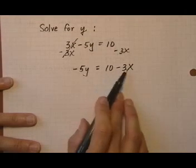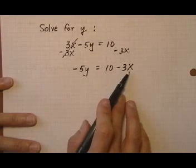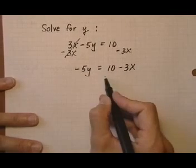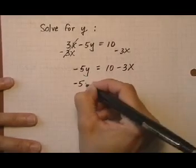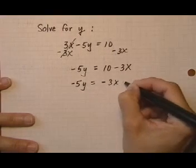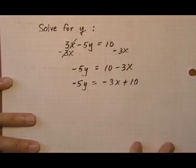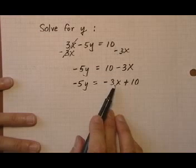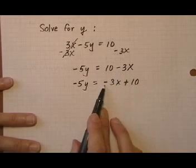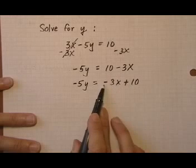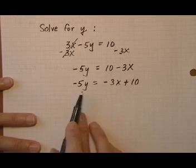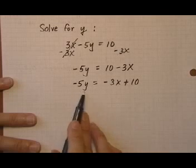We don't do 10 minus 3 because these are not like terms — we just leave it as 10 take away 3x. I'm going to rewrite this and put the x term first, because the slope-intercept form we're comparing with always has the x term first. When you move terms around, keep the sign in front of the term with the term. So take away 3x is negative 3x, and 10 is plus 10. Now we want to divide both sides by negative 5.